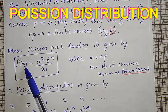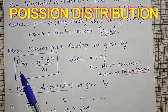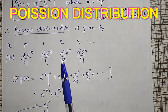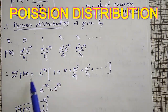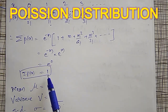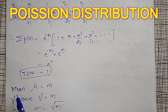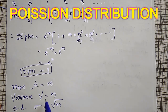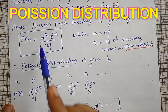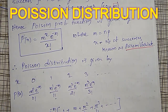X is the number of successes, which we define as Poisson's Variate. We have shown that the sum of this probability function equals 1. The mean for Poisson distribution is given by mu equals m, and the variance is also equal to m. Using this property and this probability function, let me now solve examples.